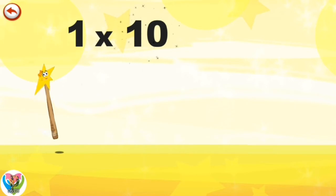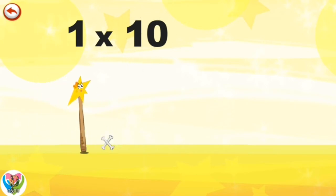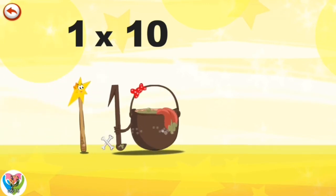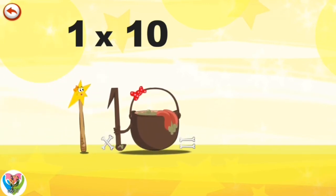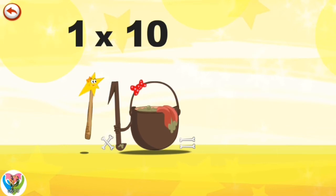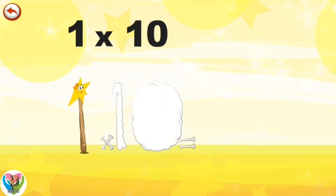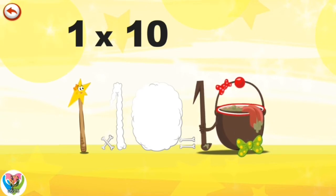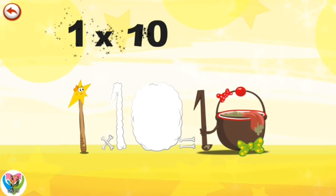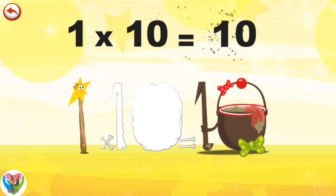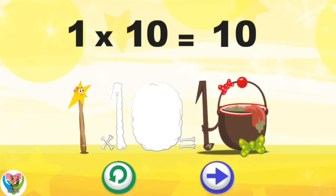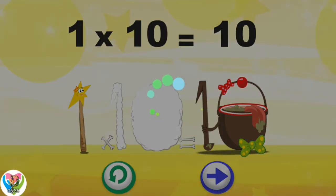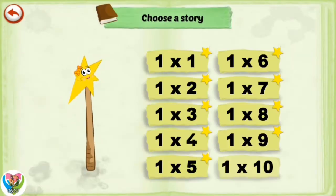What's the story of 1×10? Mrs. Wonderwand can't help playing tricks on her friends. When she comes across the Magi 10 potion, she casts a spell and changes her into Magi 10 Potion clown. 1×10 is 10.